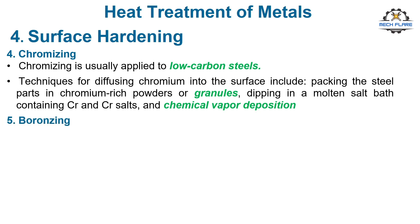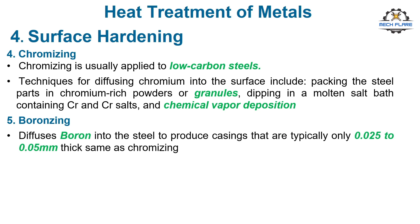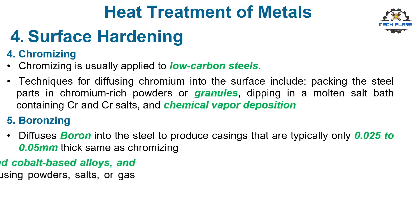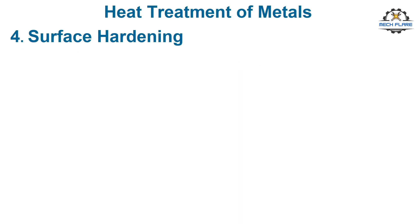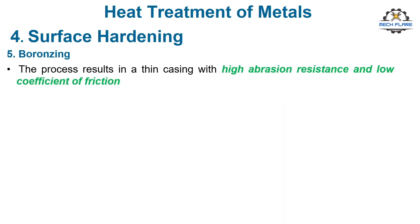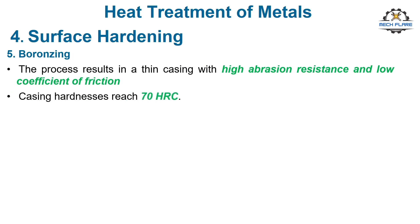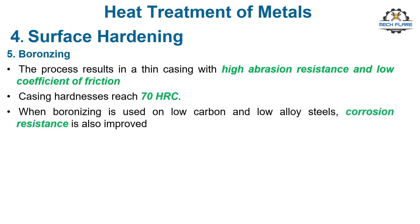Boronizing diffuses boron into the steel to produce casings that are typically only 0.025 to 0.05 mm thick, the same as chromizing. Boronizing is performed on tool steels, nickel and cobalt-based alloys, and cast irons, in addition to plain carbon steels, using powders, salts, or gas atmospheres containing boron. The process results in a thin casing with high abrasion resistance and low coefficient of friction. Casing hardnesses reach 70 HRC. When boronizing is used on low-carbon and low-alloy steels, corrosion resistance is also improved.